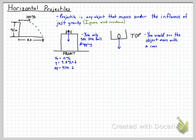The cannonball moves at a constant rate of 100 meters per second horizontally because horizontal motion is not affected by gravity. The only thing that affects horizontal velocity is the ground when it hits, and we won't account for that here. So the horizontal acceleration is zero, velocity is a constant 100 meters per second, and we're looking for how far it goes in the x-direction.